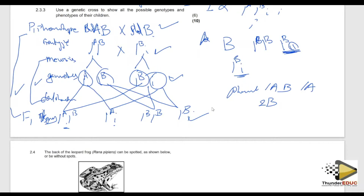Let me know in the comments below — for those on live — how many alleles control blood group? And how many genes control blood group? Those are two questions. I want to see your answers while we go to the last question.